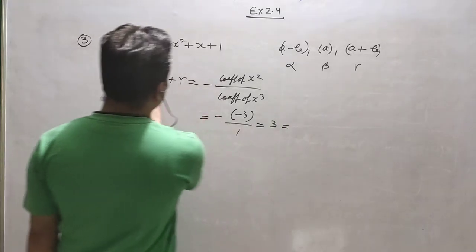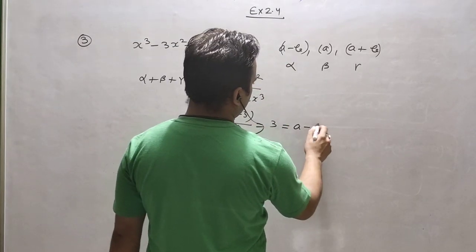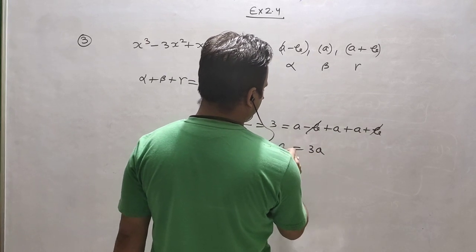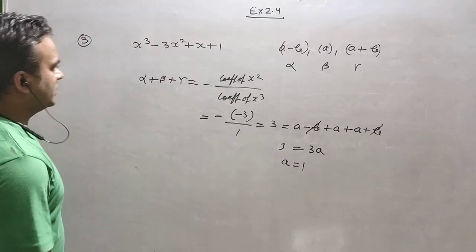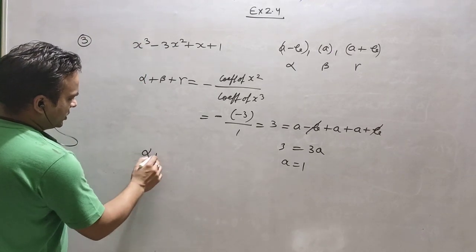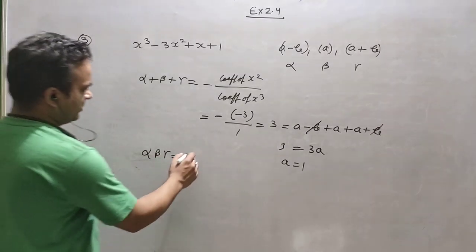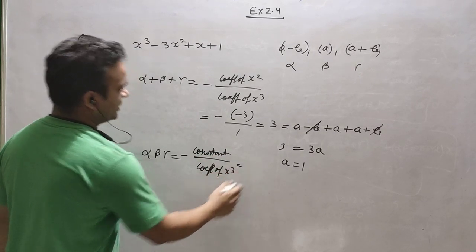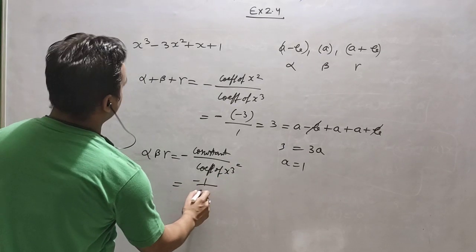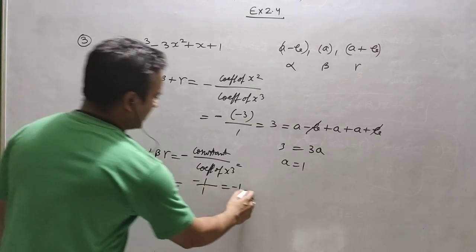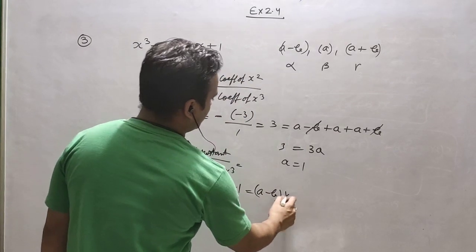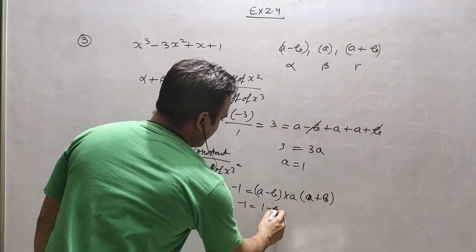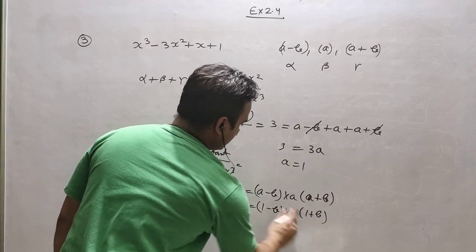The sum of the three roots is 3 and the root side has a minus b, a, and a plus b. So this equals 3a — b and minus b cancel — it is 3a equals 3, so a equals 1. Next condition: alpha beta gamma equals minus (constant part) upon (coefficient of x cubed) which is minus 1 upon 1, equals minus 1. Alpha beta gamma with a equals 1 gives (1 minus b)(1)(1 plus b) which is 1 minus b squared.